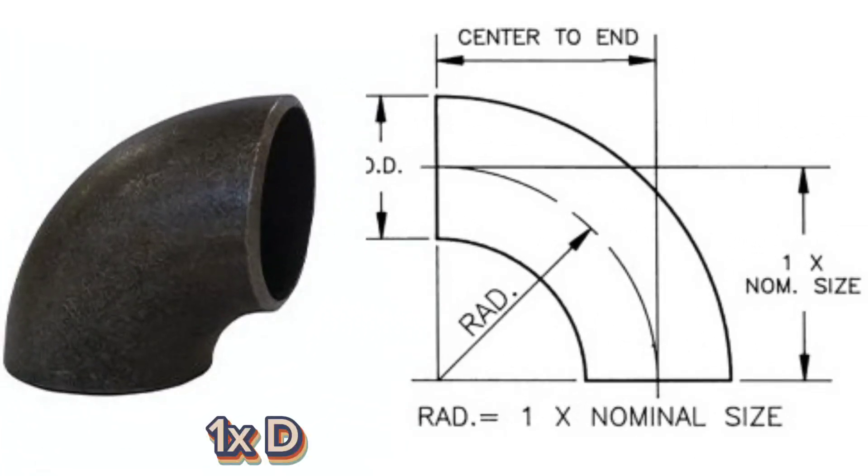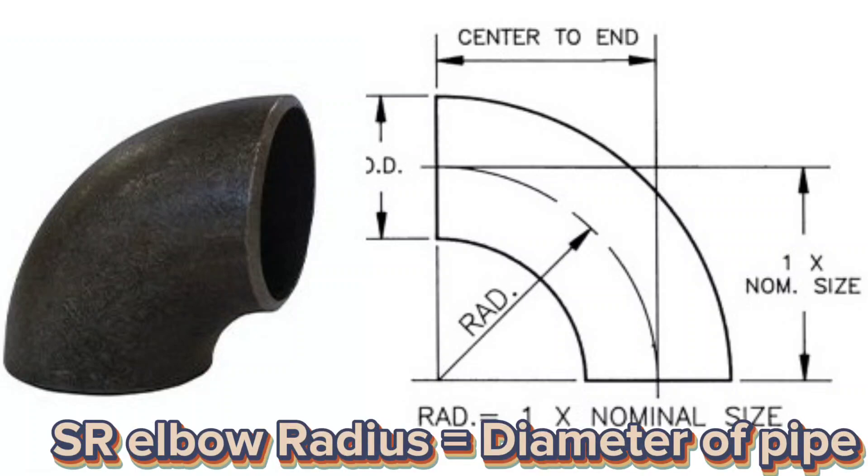Short radius elbows 1 XD is having the radius equivalent to 1 time the diameter of the pipe. So, SR elbow radius equals diameter of pipe.